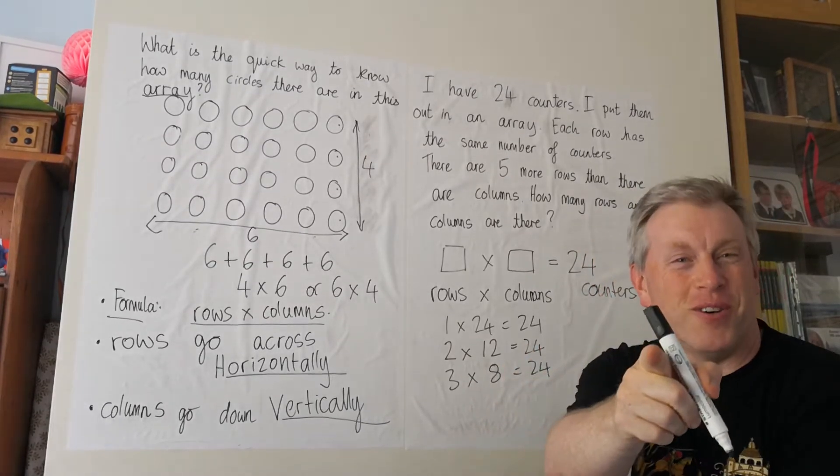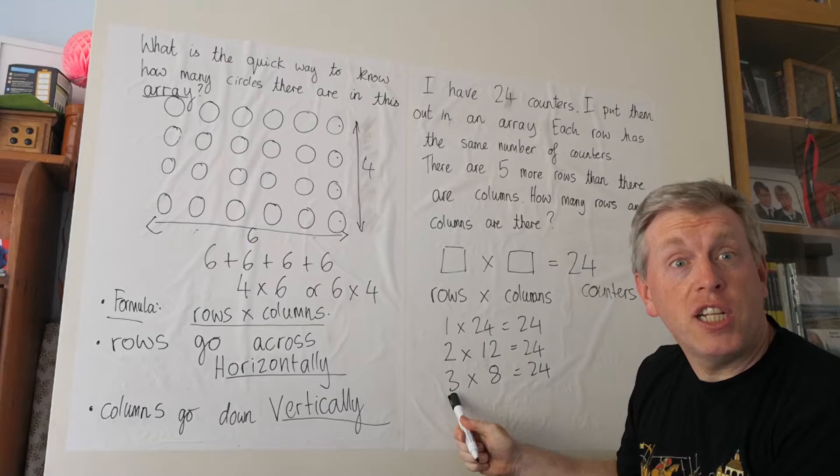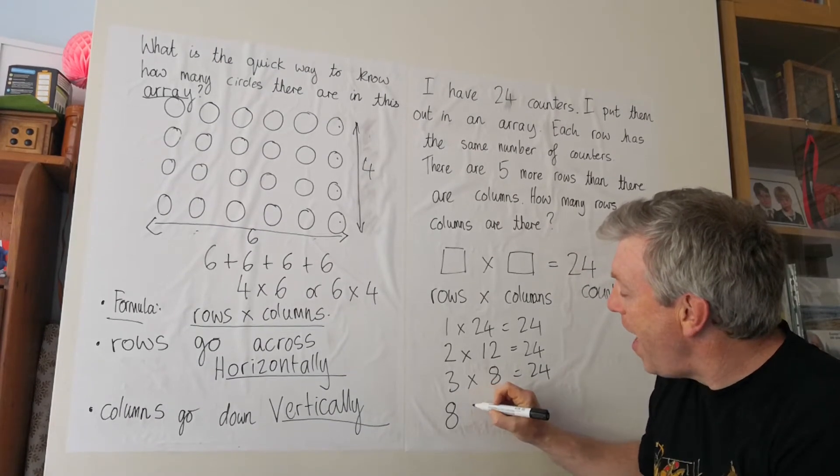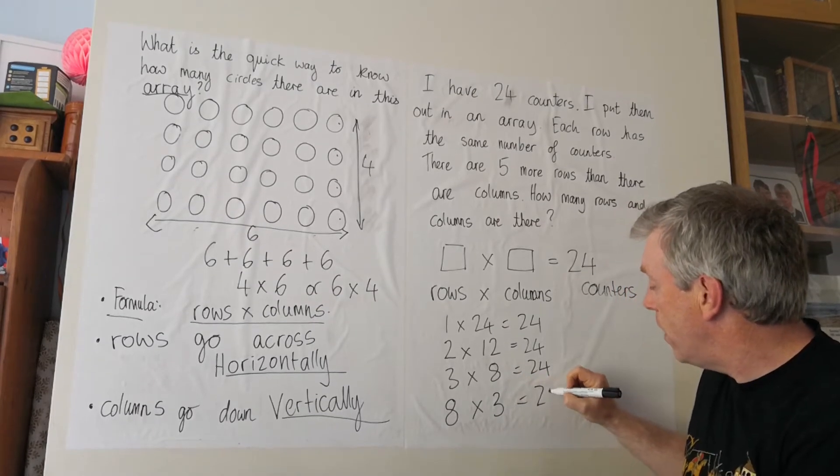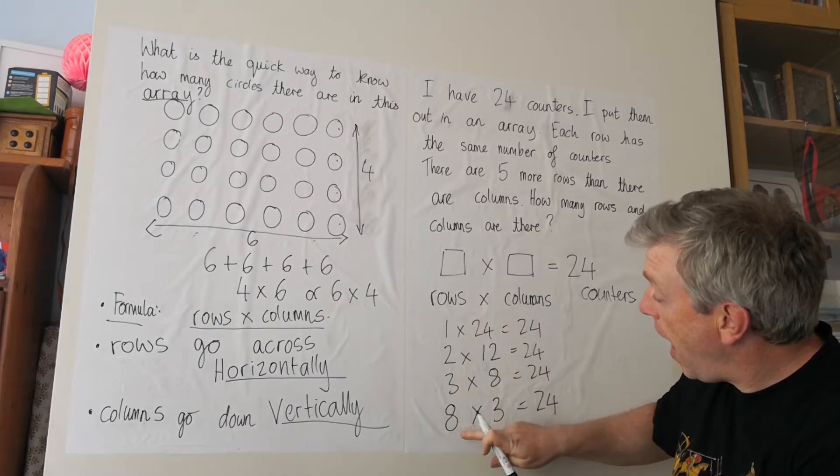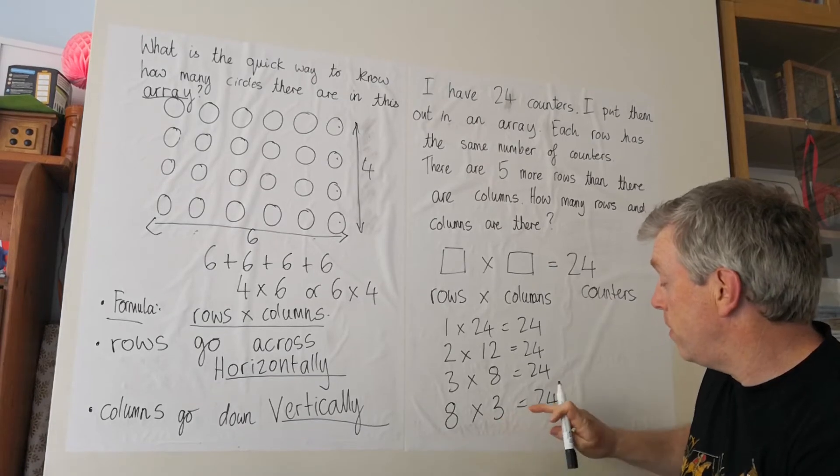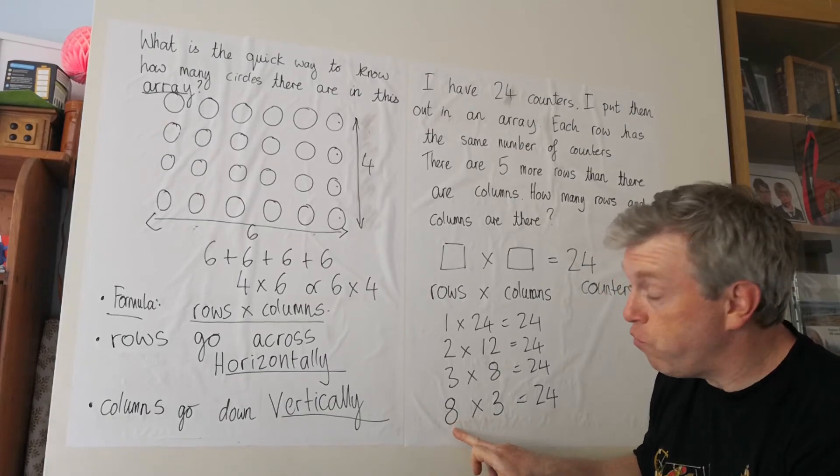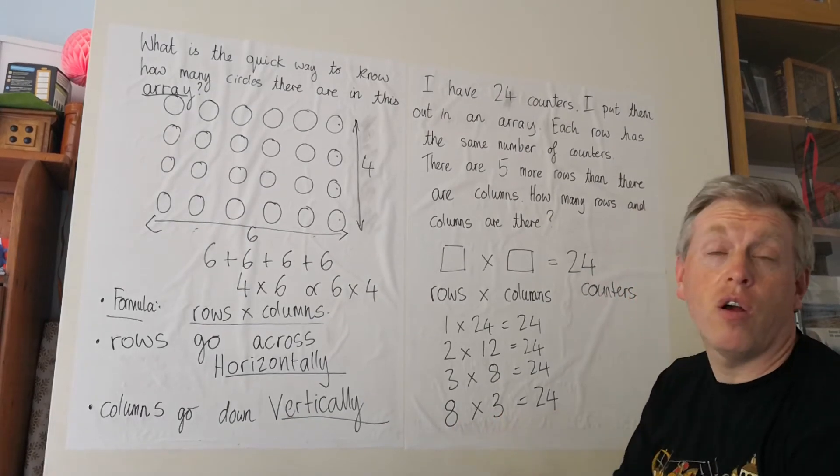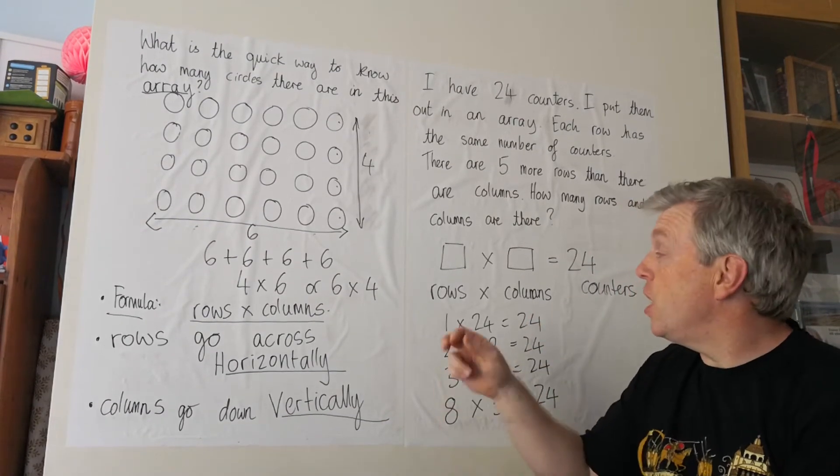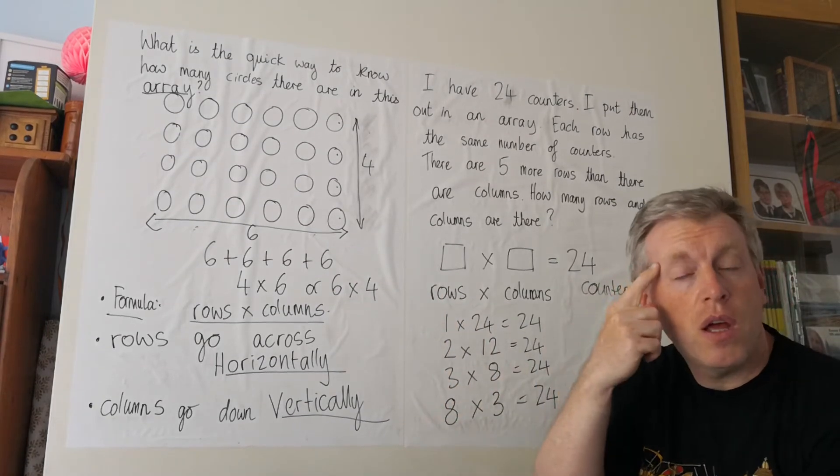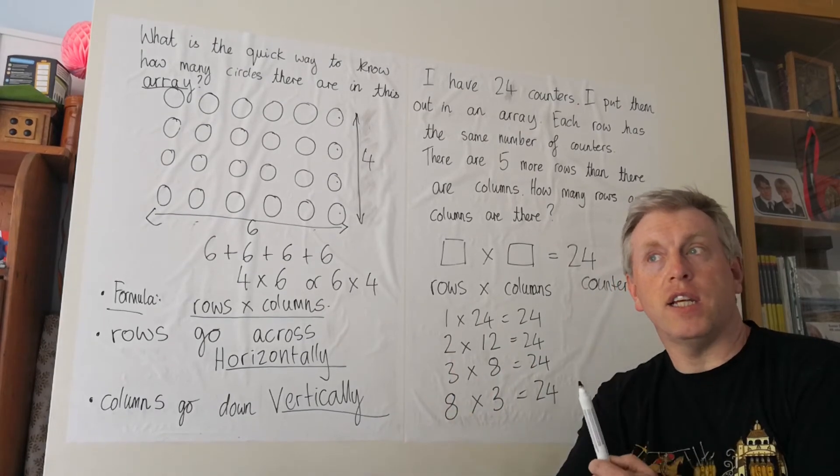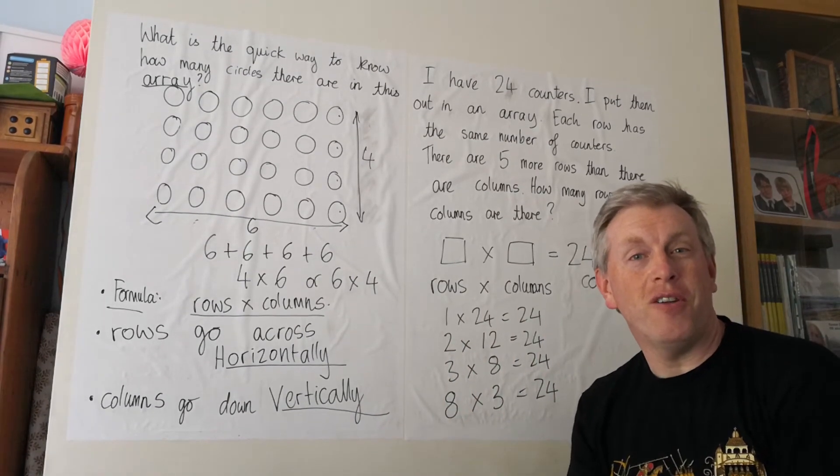But I know what to do now. Multiplication is commutative. Three times eight is twenty-four, so eight times three is twenty-four. Eight rows, three columns. Twenty-four counters altogether. Five more rows than there are columns. We need to use our times tables and work through it and see when we get to however many more rows than there are columns.